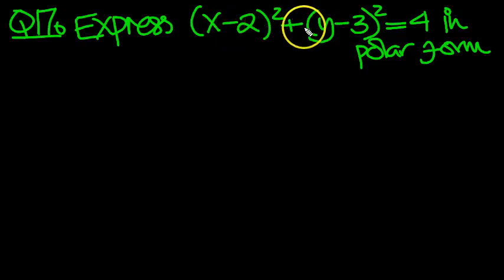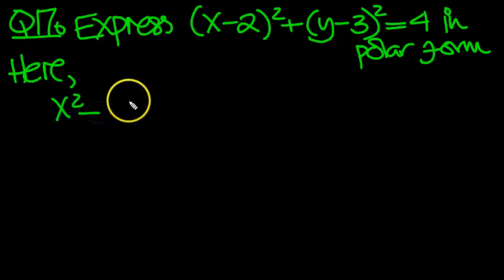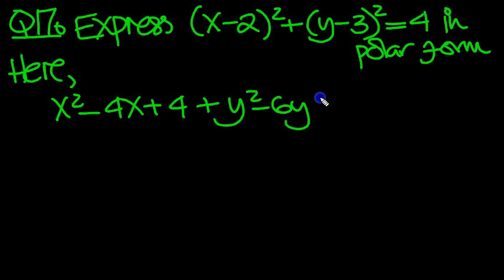Express (x-2)² + (y-3)² = 4 in polar form. So let's expand this bracket. Here we've got x² - 4x + 4, and the next bracket expands to y² - 6y + 9 = 4.